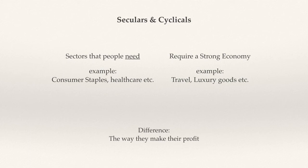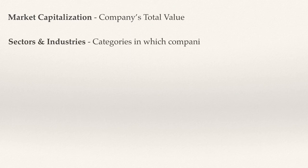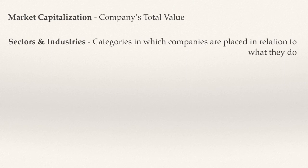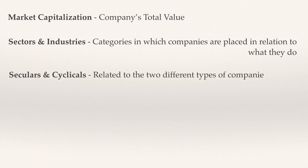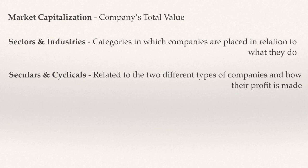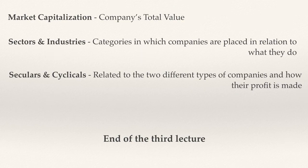The three major descriptions of stock discussed in this lecture were market capitalization, which is the company's total value; sectors and industries, which are categories in which companies are placed in relation to what they do; and seculars and cyclicals, which relates to the two different types of companies and how they make their profits. This concludes the lecture on how stocks are described. Thank you very much.